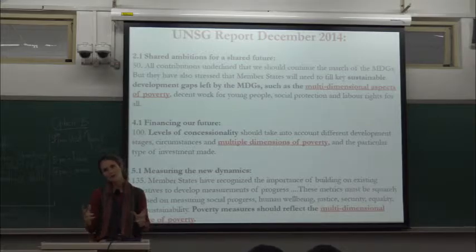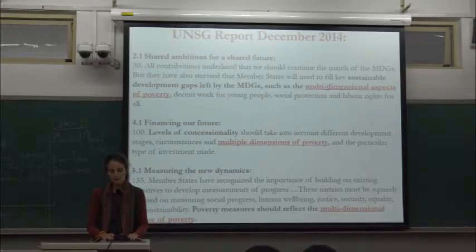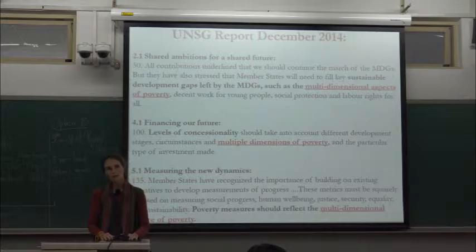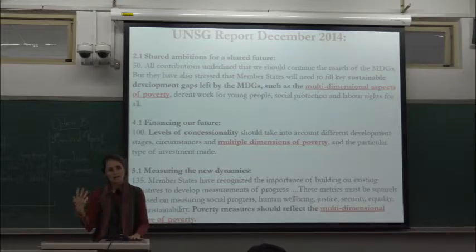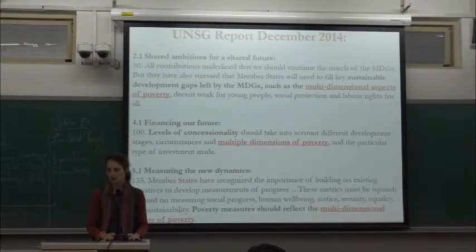After the July Open Working Group, there was a sense of disappointment that there were so many goals and they seemed so unwieldy and ambitious. The UN Secretary General's report in December 2014 wanted to point out that we need to be ambitious for the poor and for our planet. Without touching the 17 goals, he laid in place a conceptual framework for understanding them, and the document also gave greater prominence to multidimensional poverty.